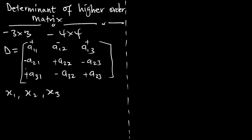Now that we have the elements and we know the signs attached to them, this is how we are going to find the determinant of D. Delta of D, as we always write, is going to be — pay attention — it's either you pick one row or one column. Any of them will work. You stick to one. In this situation, I'm going to pick the first column to do the analysis.